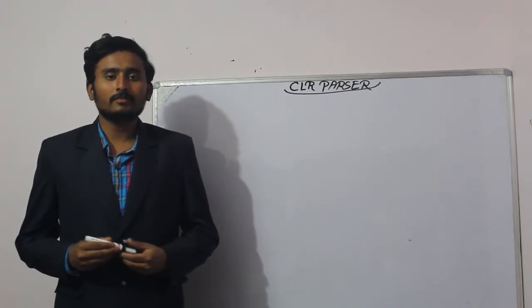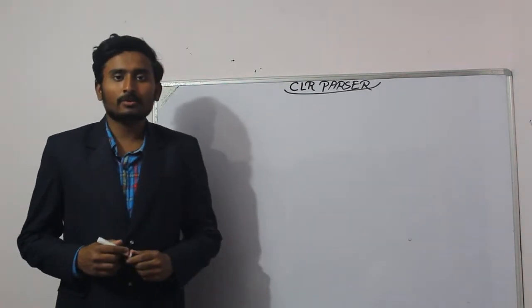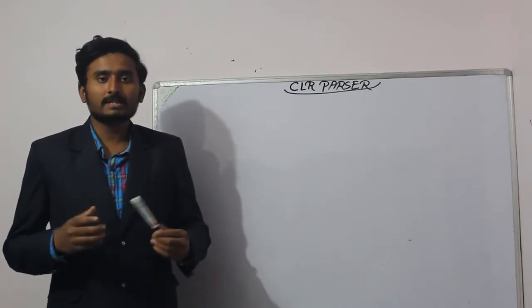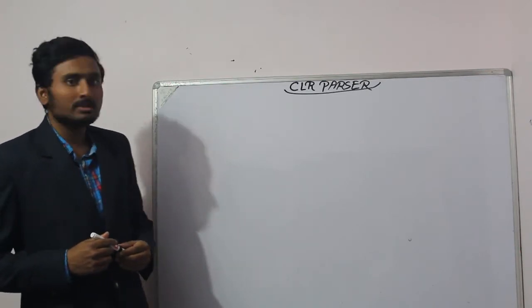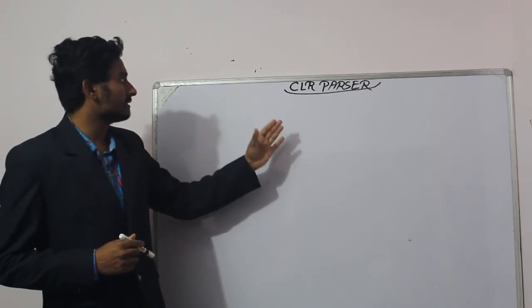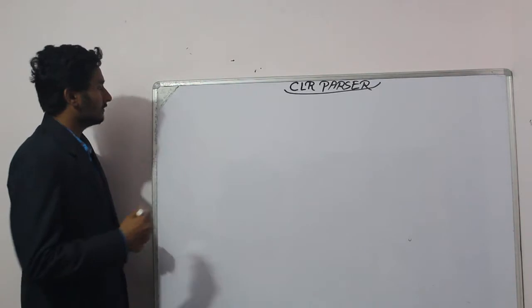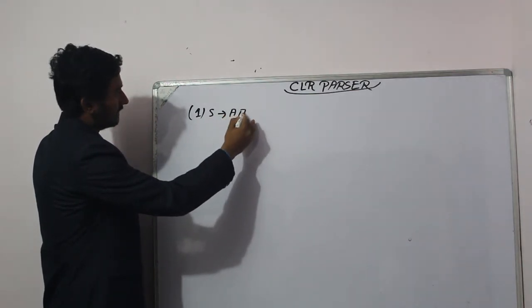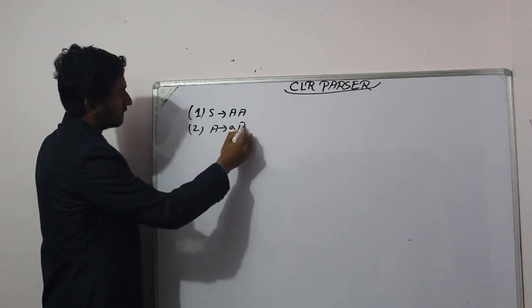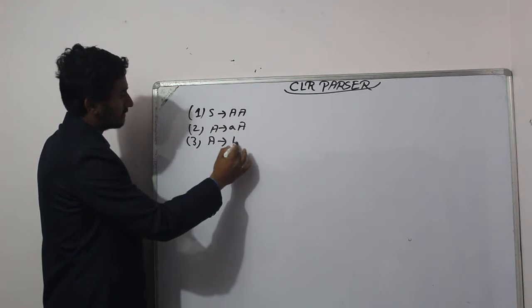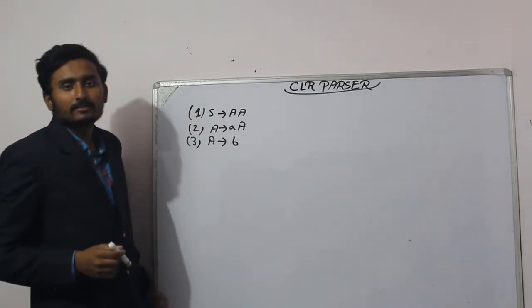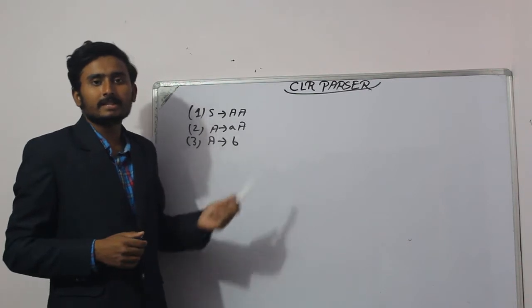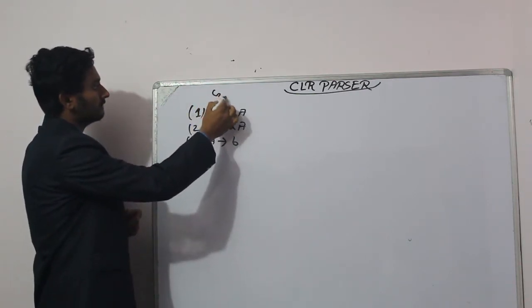Hello friends, welcome to Learning by Fun. We are continuing our lecture on CLR parser. As already discussed about LR1 items in the last video, in today's tutorial we are going to discuss how to construct the parse table for the CLR parser. Suppose we are given a grammar G with productions: S derives A A, A derives small a capital A, and A derives small b.